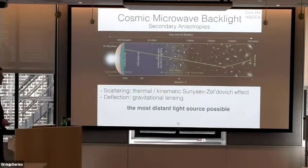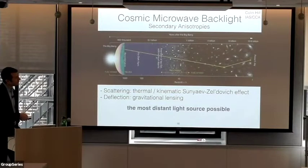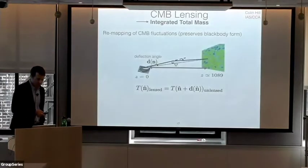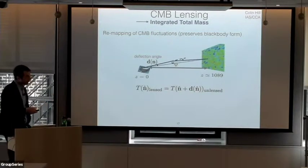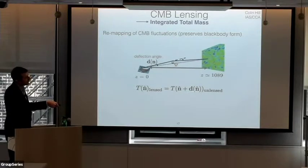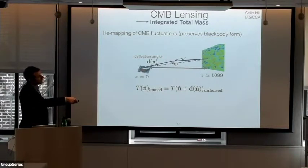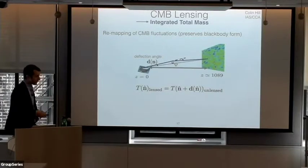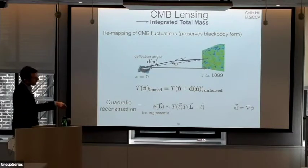Now let me talk about deflection processes in the secondary anisotropies — gravitational lensing of the CMB. One neat thing about gravitational lensing of this particular source is that the CMB is the most distant light source possible in the universe. Gravitational lensing basically just remaps the fluctuations in the CMB — preserving the blackbody form spectrally — as some massive structure slightly deflects the path of CMB photons. We can write the lensed CMB as a remapping of the unlensed CMB under this deflection field D. By Taylor-expanding this equation and examining the two-point correlation function, there's a term proportional to D, which we can invert to solve for the lensing potential — this is the quadratic estimator for CMB lensing.